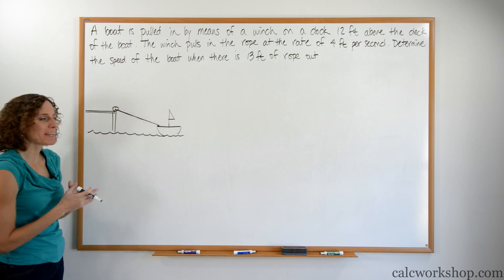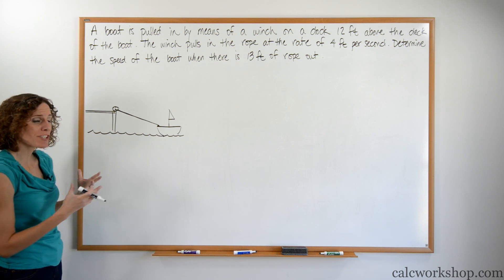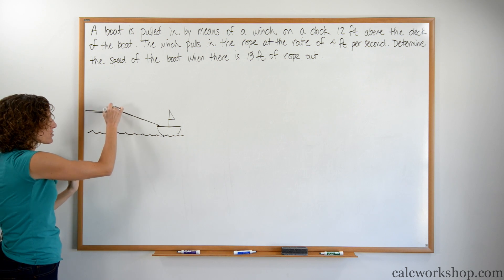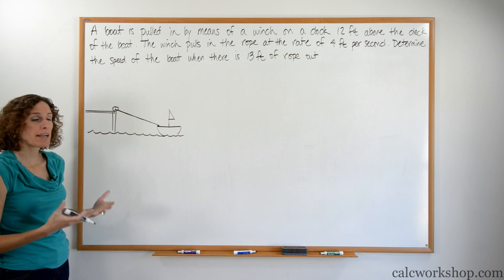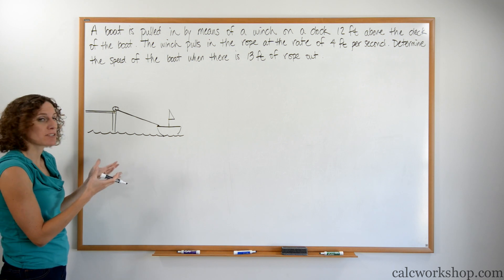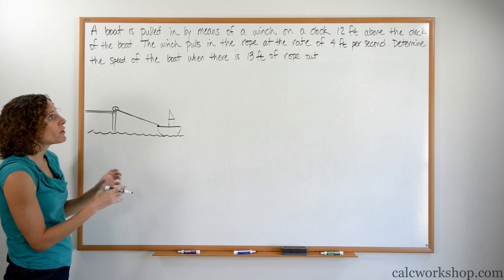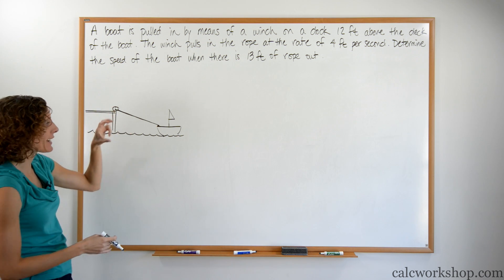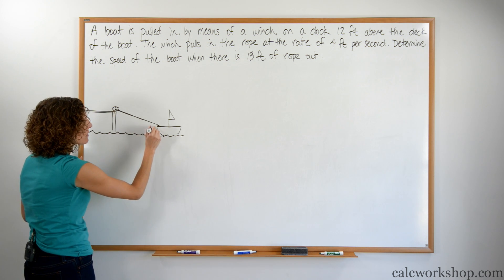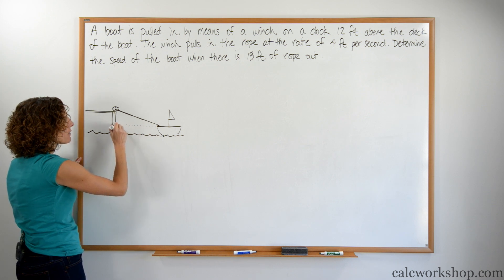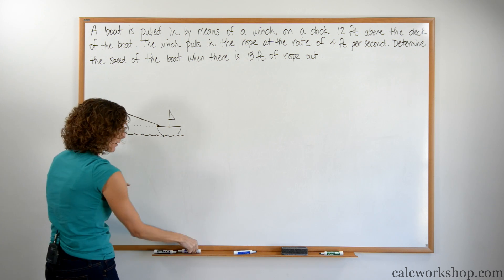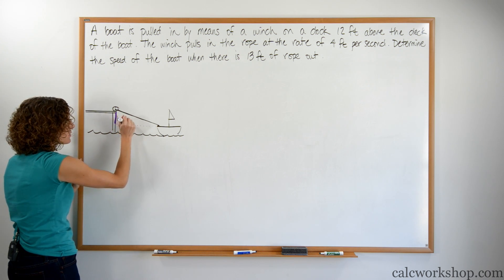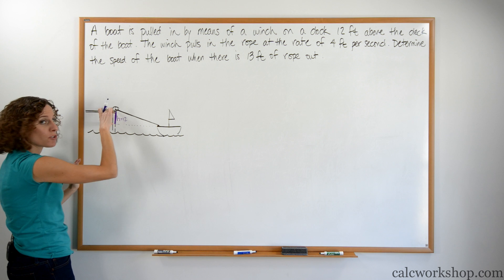So here's the basic understanding of the picture. A winch is nothing more than a type of pulley, so we're cranking this boat in. Here's the winch that's on the dock. How far above the dock or the boat is this winch located? They tell us 12 feet above the deck. If this is the deck, this is going to be 12 right here. So this distance, this height, is 12 from the deck of the boat to the winch.